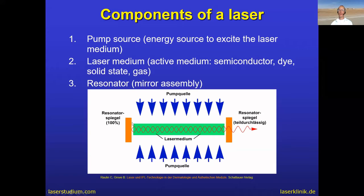At a 90-degree angle to the mirrors, the photons go back and forth many times. By doing this, they produce more and more photons of the same direction and the same wavelength.